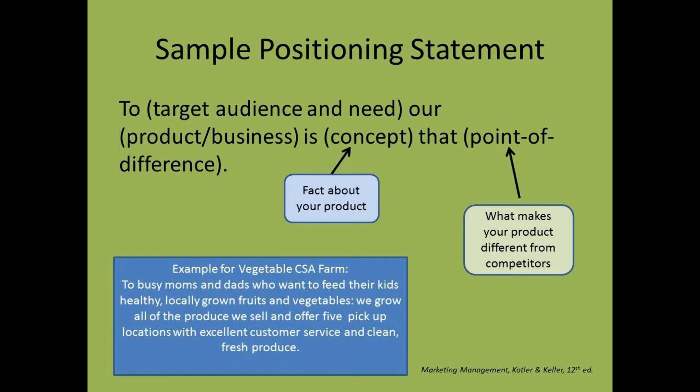Let's look at the example here, which is for a vegetable CSA farm. Their positioning statement reads: 'To busy moms and dads who want to feed their kids healthy, locally grown fruits and vegetables' — that's the target audience and need. 'We grow all of the produce we sell and offer five pickup locations' — that's a fact or concept. 'With excellent customer service and clean, fresh produce' — that's the point of difference, what makes this product different from their competitors.